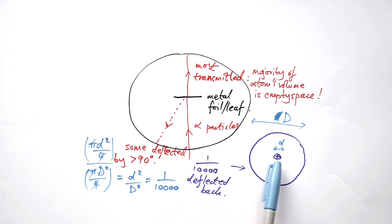In other words, the area of the target of the nucleus is 10,000 times smaller than the area of the whole target of the atom. Anything that didn't hit the nucleus in the middle just went straight through. That's why he had most of the alpha particles being transmitted through this gold metal foil.